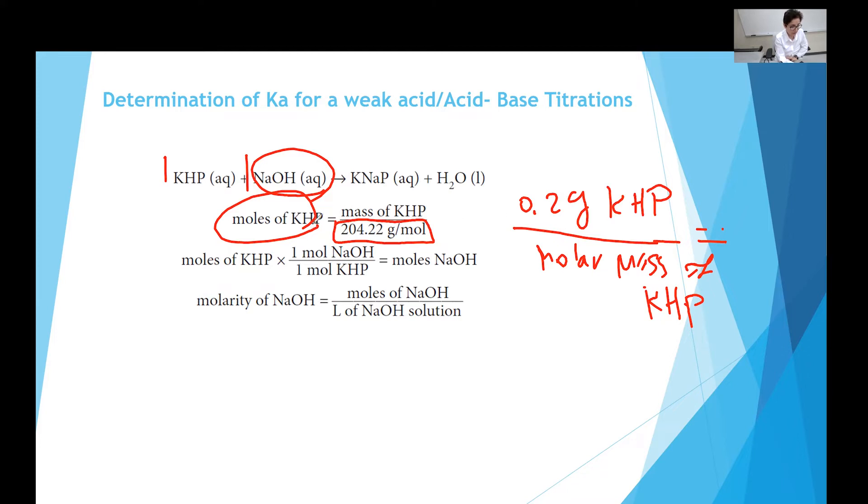In this balanced equation, we have one-to-one ratio. So when we have one-to-one ratio, that means number of moles of acid equals the number of moles of base at the equivalence point. So we find the number of moles of acid, which is moles of KHP, mass divided by molar mass. And we can use this conversion factor, or we can say number of moles of KHP equals number of moles of sodium hydroxide because it's a one-to-one ratio.